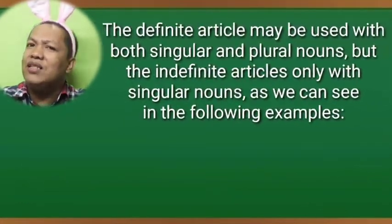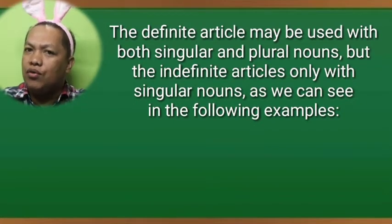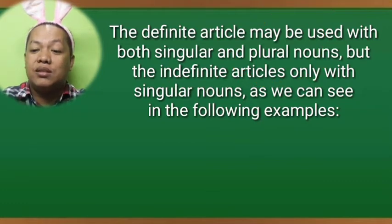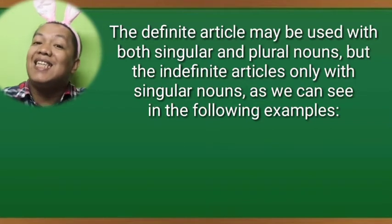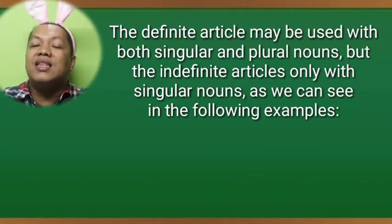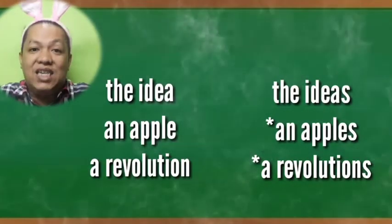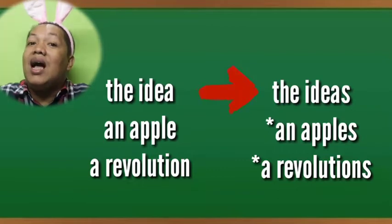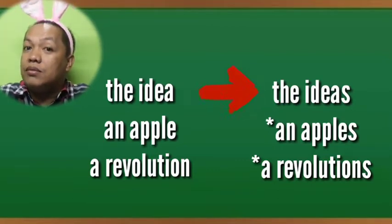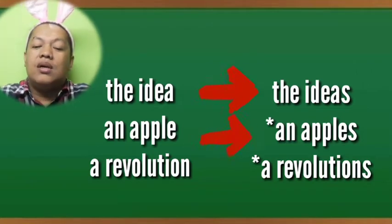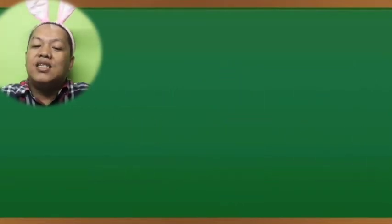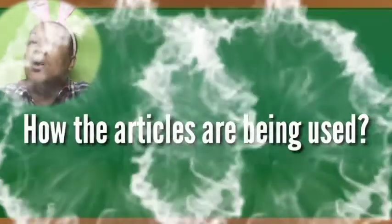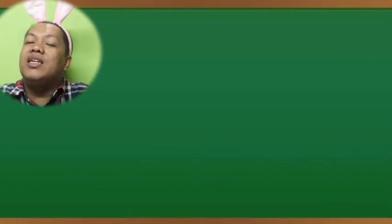Never forget that the definite article 'the' can be used with both singular and plural nouns, while the indefinite articles 'a' and 'an' can only be used with singular nouns. Look at the examples: 'the idea,' 'the ideas,' 'an apple,' 'a revolution.' Notice in the given examples how the articles are being used. I hope you already understood how to use the three articles in sentences.